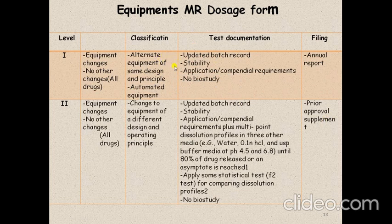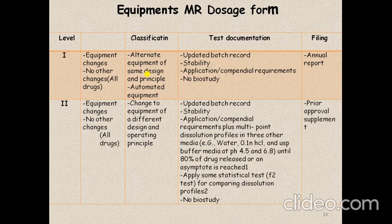For equipment changes, level 1 involves alternate equipment of the same design and operating principle, or a transition to automated equipment. If you replace previous equipment with new equipment having the same design and principle, or move from non-automated to automated equipment, it is level 1. Documentation requires updated batch record, stability data, and compendial requirement release test. File in annual report.